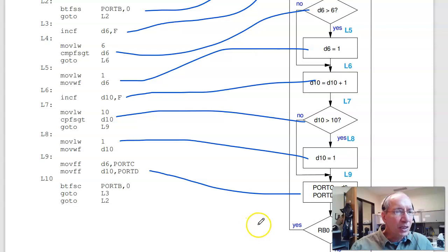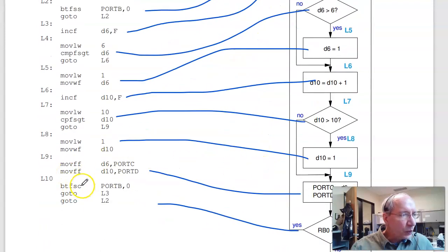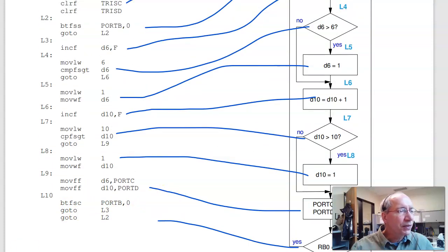Copy D6 to port C, copy D10 to port D, and then check. If it's a 1, I go back to label 3. So on a 1, I go to label 3. Otherwise, I go to label 2. And that's test number 3 for 376.